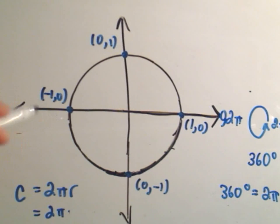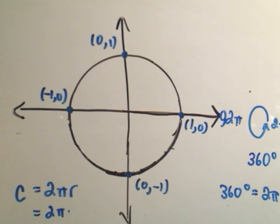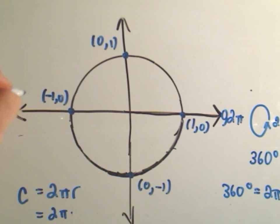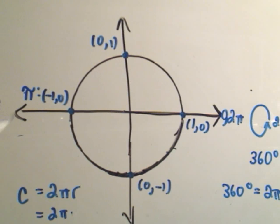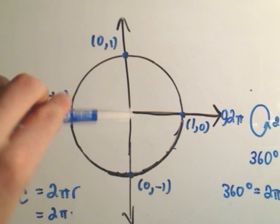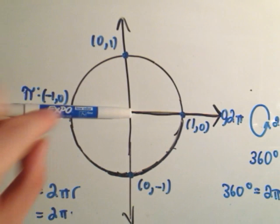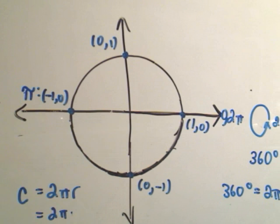Half of 2π would be π radians — sorry, I said degrees before, that's wrong. It's 0 and 2π radians. So π radians corresponds to the point (-1, 0), because when we're at an angle of π, or equivalently 180 degrees, we're at (-1, 0).